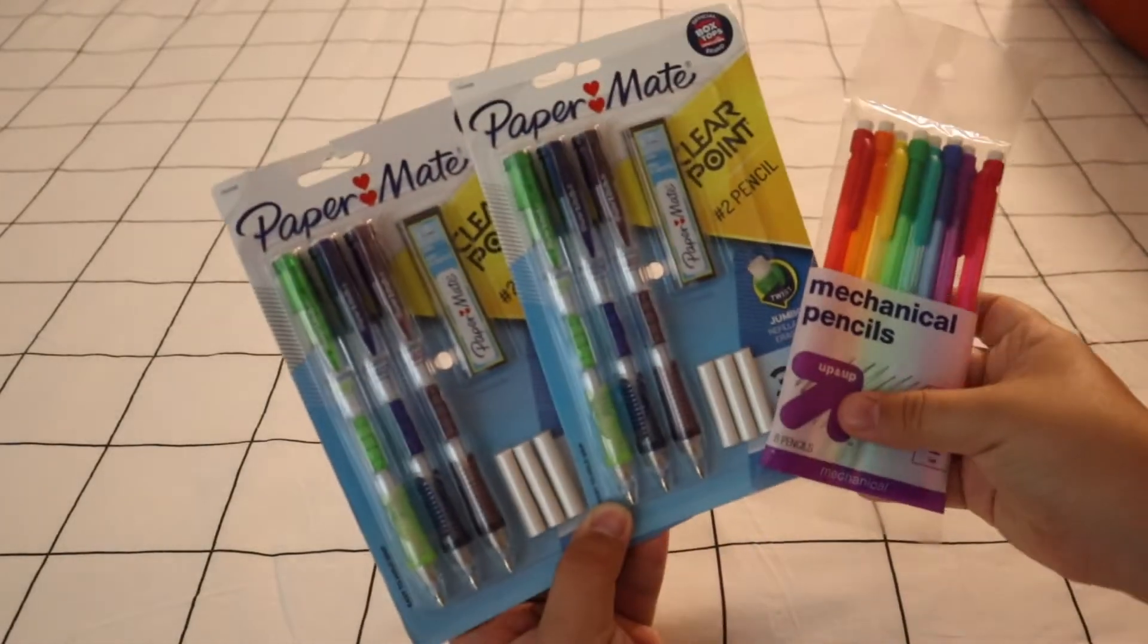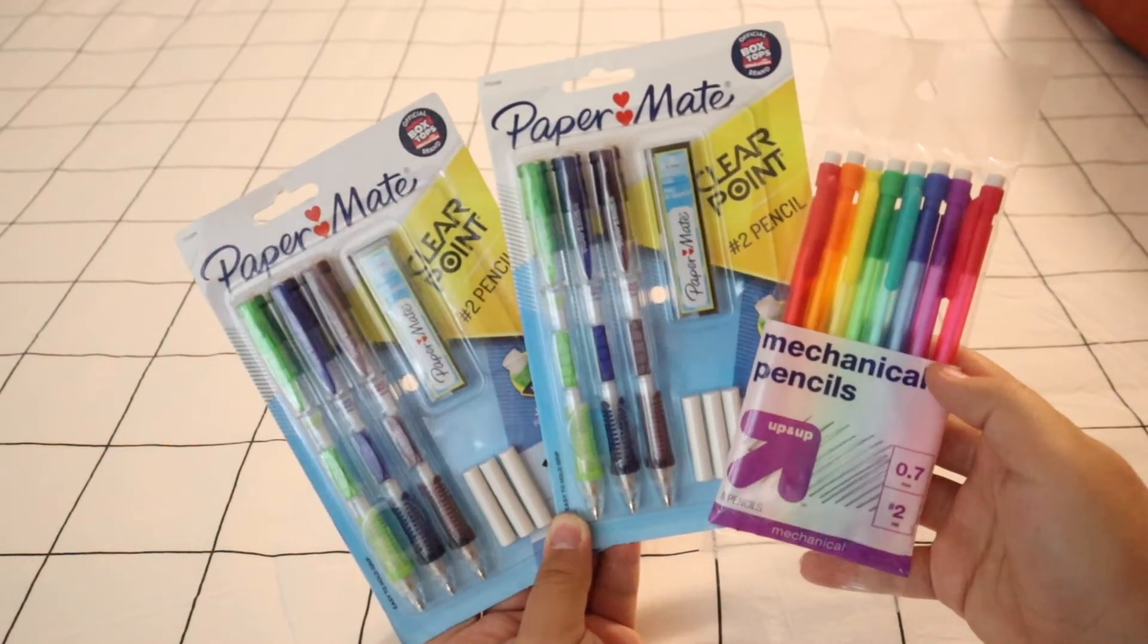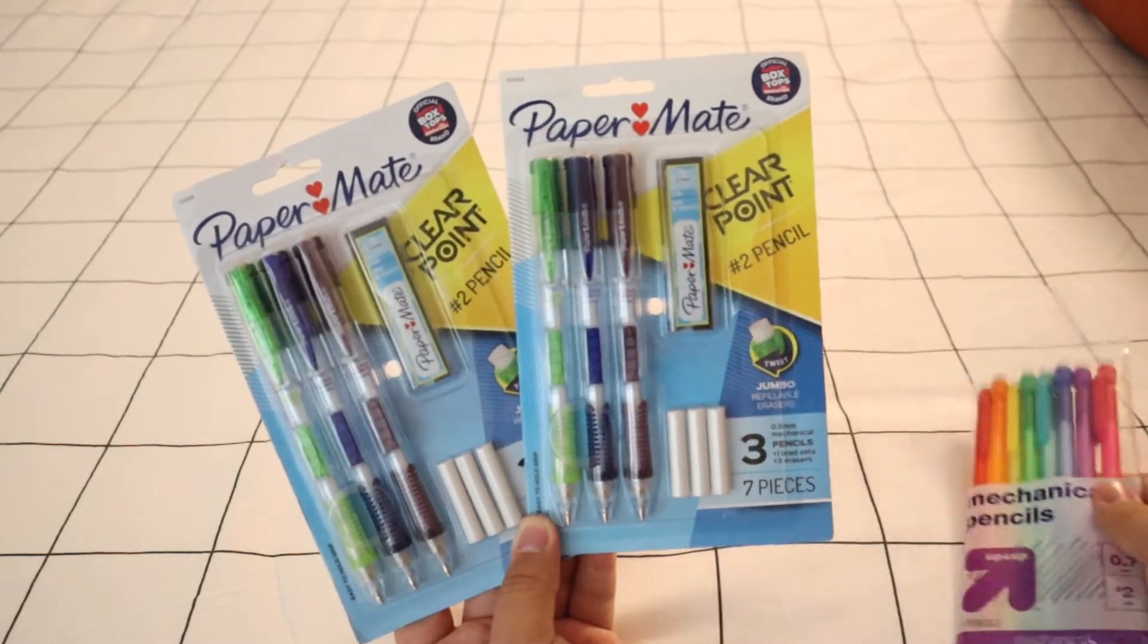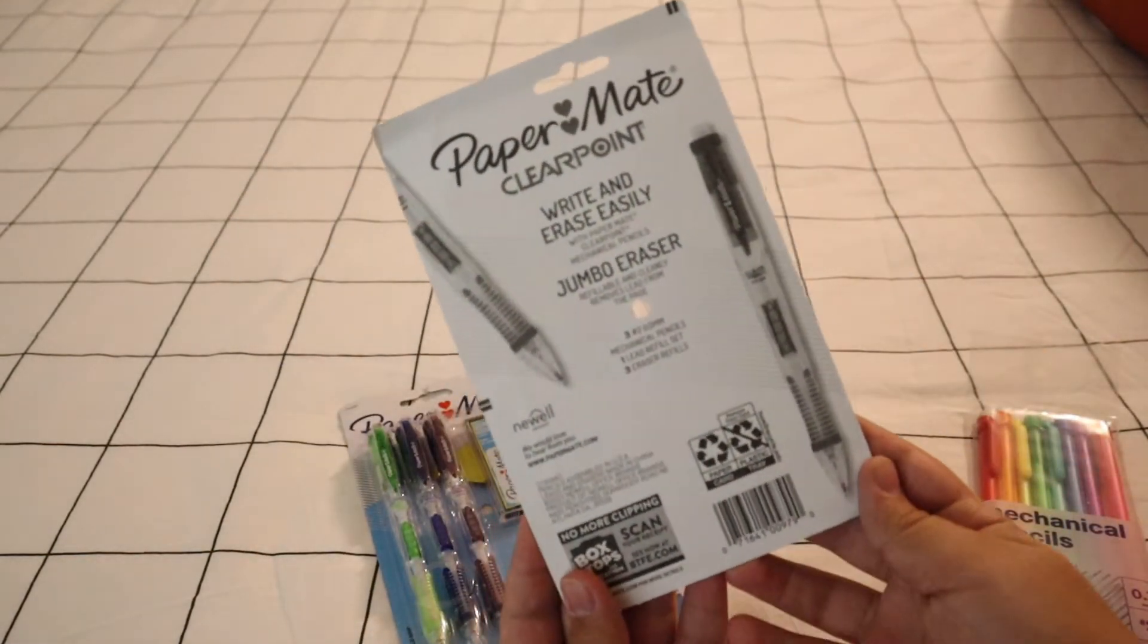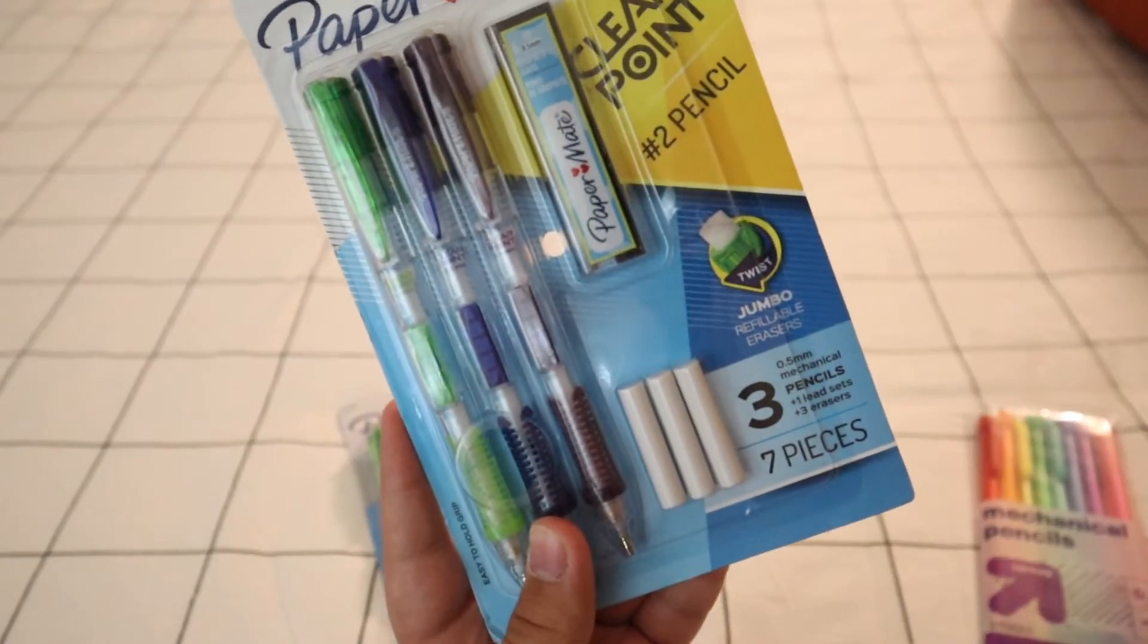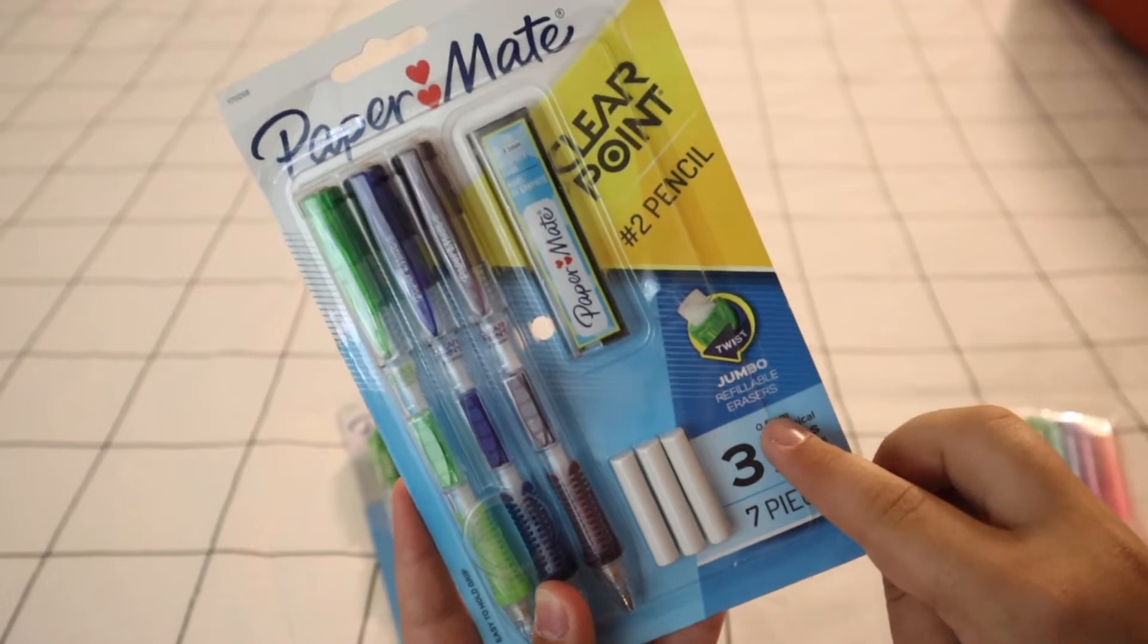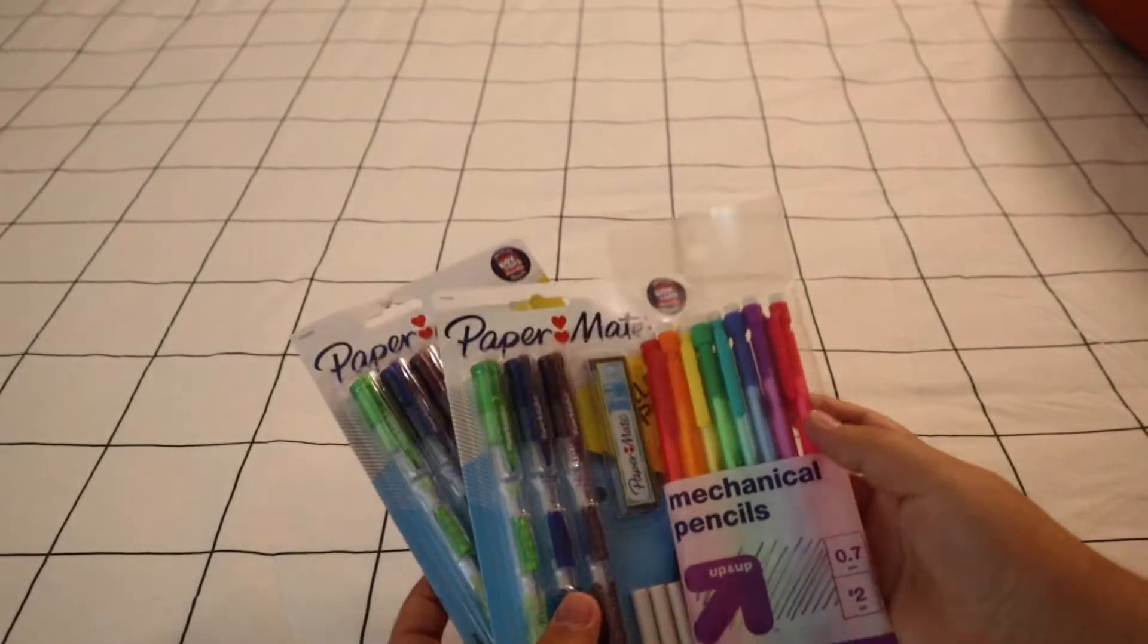Now to actually write this school year, I decided to pick up these Paper Mate Clear Point number two pencils. Yes, I got two packs, they were on sale so I was not going to miss out on them. And then of course I also did get the generic Up & Up Target brand pencils. Those are just 0.7. And as you can see, I'm specifically pointing to 0.5 because I will solely and only write in 0.5 pencils. Now the 0.7 is the handout, so yeah.